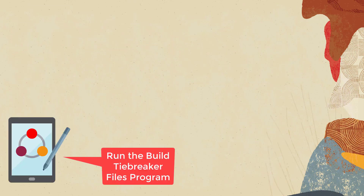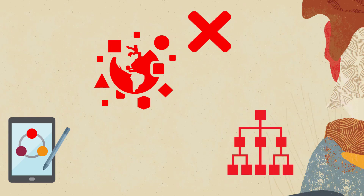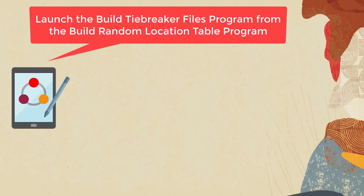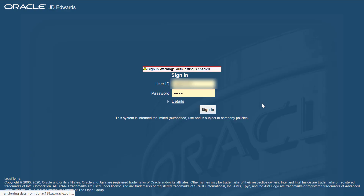When she forgets to run the Build Tiebreaker Files program, the locations are not sorted based on the tiebreaker rules. To avoid this, JD Edwards Enterprise 1 has come up with a solution enabling you to automatically launch the Build Tiebreaker Files program from the Build Random Location Table program.